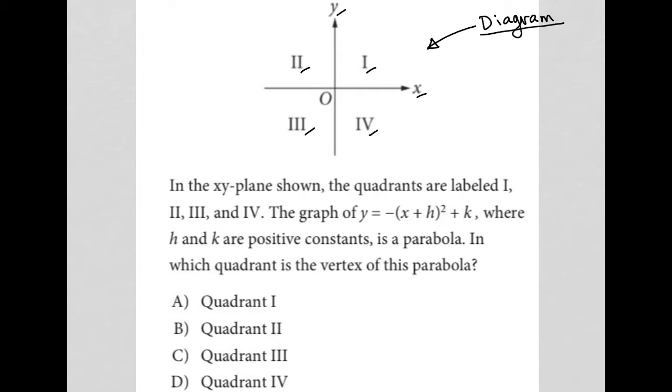So let's go to the question and see what we're being asked to do. This question says, in the x-y plane shown, the quadrants are labeled one, two, three, and four.